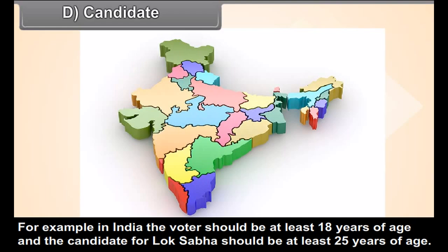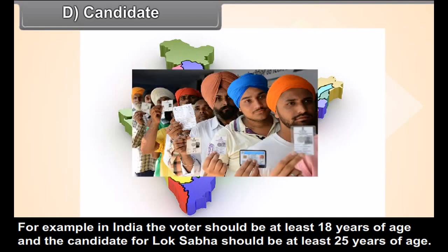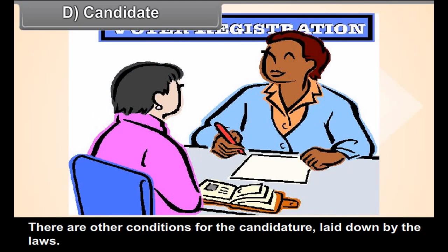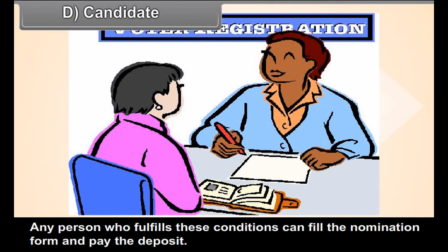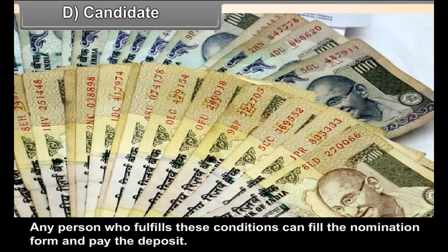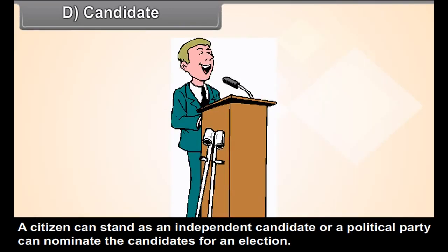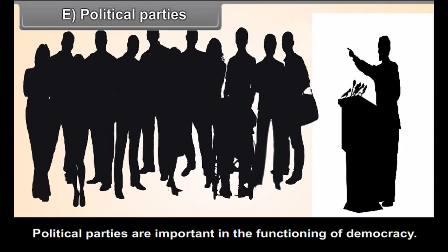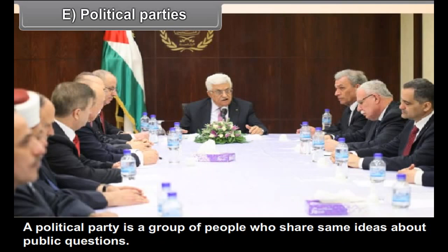Any person who is a voter can become a candidate, but there is a difference in age requirement. In India, the voter should be at least 18 years of age, while the candidate for Lok Sabha should be at least 25 years of age. There are other conditions for candidature laid down by law. Any person who fulfills these conditions can fill the nomination form and pay the deposit. A citizen can stand as an independent candidate, or a political party can nominate candidates for an election.